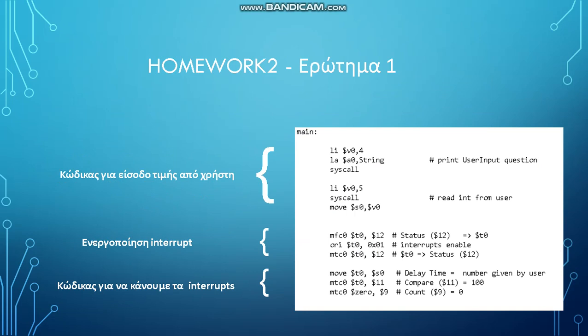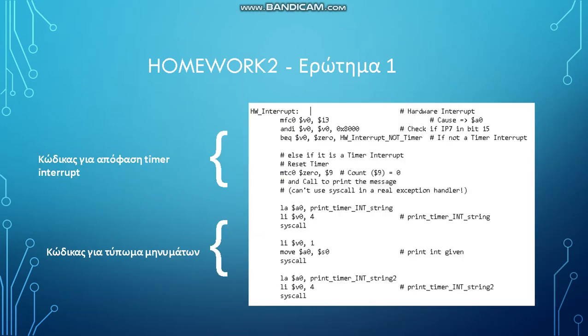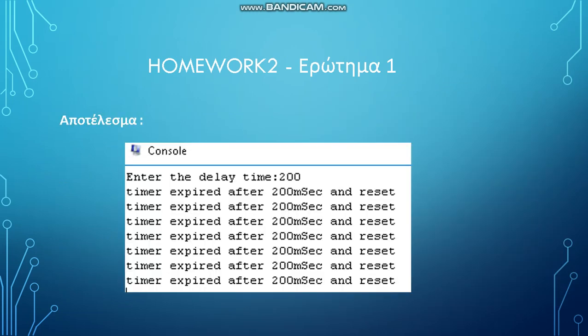Let's continue with the assignment we had. We were asked to have an integer number read from the user, and the program had to print an appropriate message every time the interrupt happened. These are the results: the user entered a delay time of 200 milliseconds. The program then printed 'timer expired' after 200 milliseconds and reset.